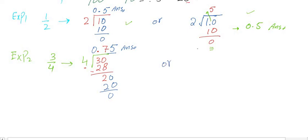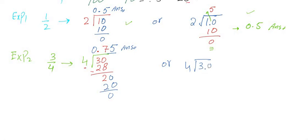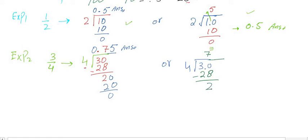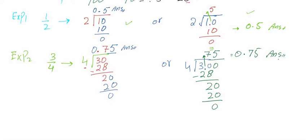We can also do 3 divided by 4 using the alternative method: since 3 is smaller, put a decimal and zero beside it — just consider it is 30. 7 times 4 gives 28; subtract to get 2. Because 2 is smaller than 4, put zeros and it becomes 20. 5 times 4 gives 20 with nothing left. Carry the decimal upward to get 0.75. Thank you very much — I hope you understand how to change decimal to fraction and fraction to decimal.